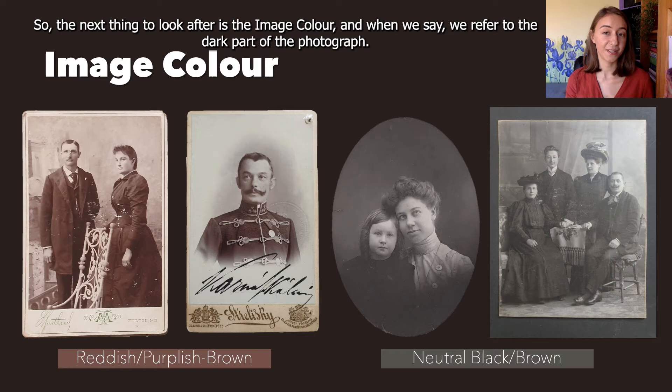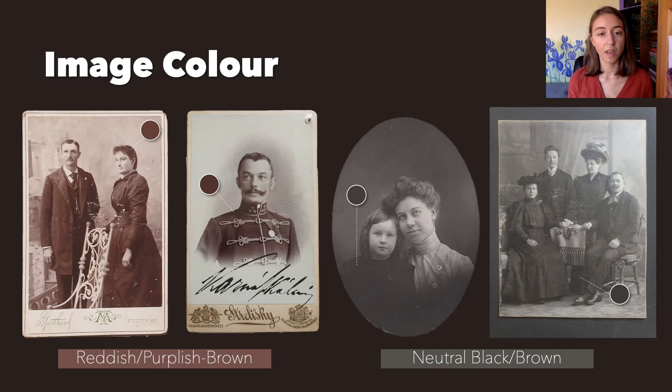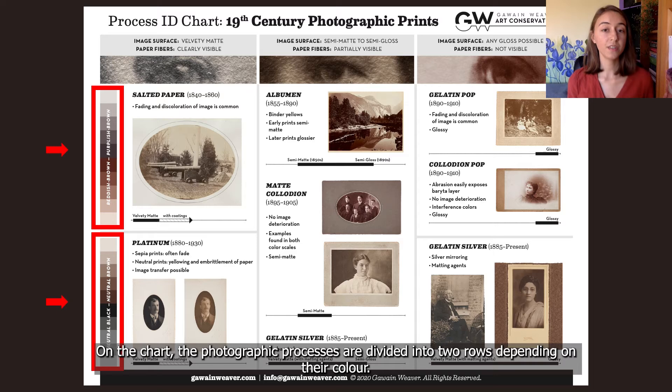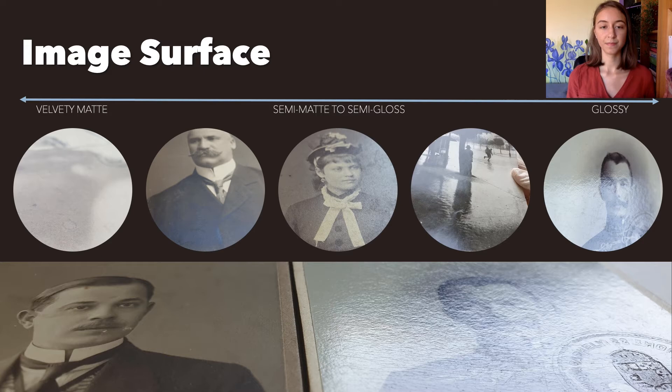However, this is not enough. The next thing to look for is the image color, and when we say that, we refer to the dark parts of the photograph. We should always keep in mind that the color of the image may vary depending on the chemical substances used for developing or toning, and it can also differ depending on how deteriorated the print is. But we should not mistake yellowing for the image color. On the chart, the photographic processes are divided into two rows depending on their color: on the first are the more reddish-purplish-brown prints, and on the second are those with a more neutral black or brown color.